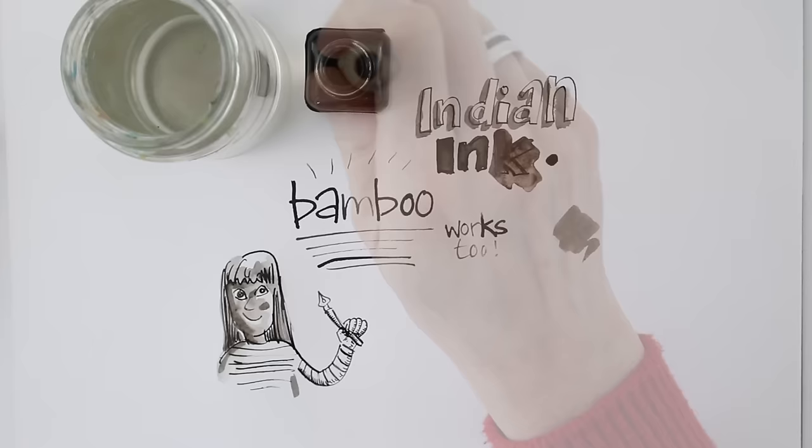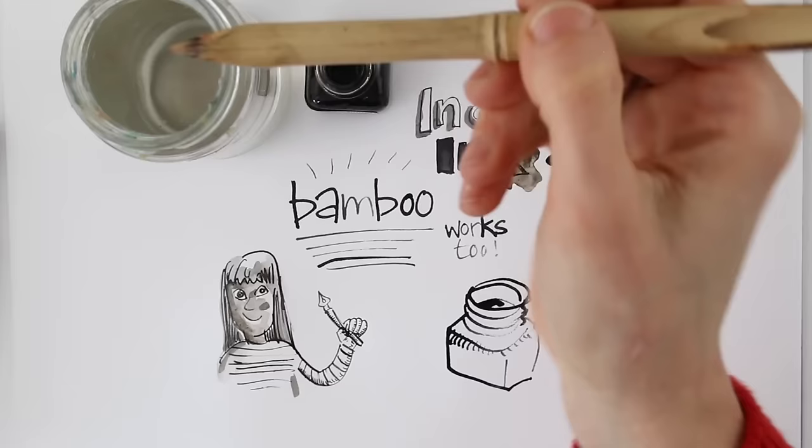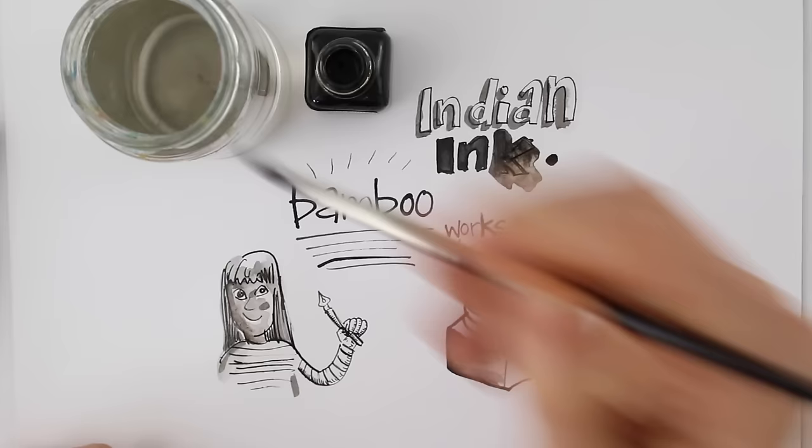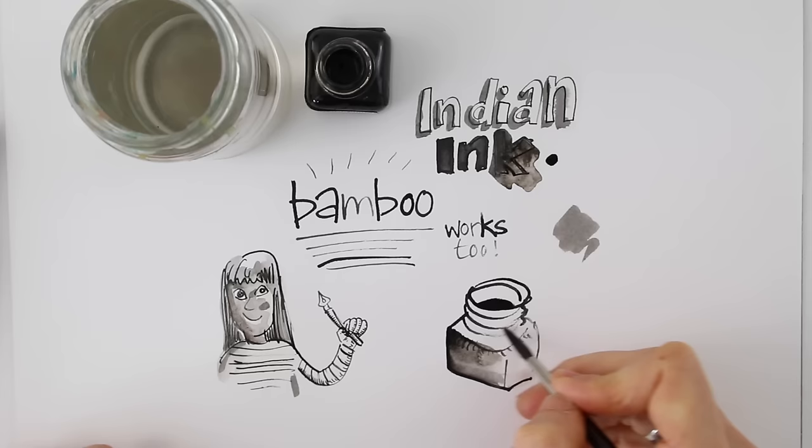Using the bamboo pen, I'll do another sketch. While the ink is still wet, I use water and carefully touch some of the lines with my brush to activate the ink and create shading.